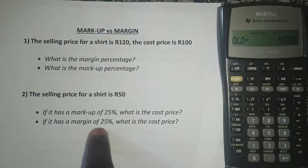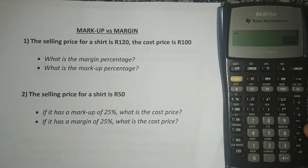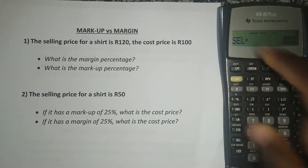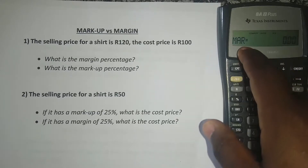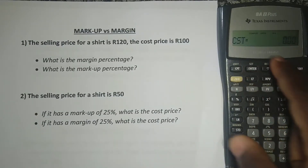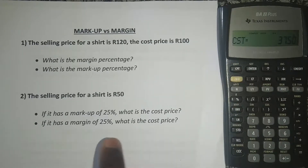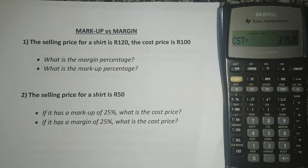Now the second question: if there's a margin of 25%, what is the cost price? Now we go to margins. Let me clear my work. Then I go to second function — this time, if I'm doing margins, I press number three for profit. I press the downward arrow. I have the selling price which is 50 Rand, so I press 50 and enter. Then the downward arrow again — the margin is 25%, so I press 25 and enter. Then press the downward arrow again. I want the cost price, so I press CPT for compute. And there it has given me: if the margin is 25% and the selling price is 50 Rand, the cost price is 37.5 Rand.